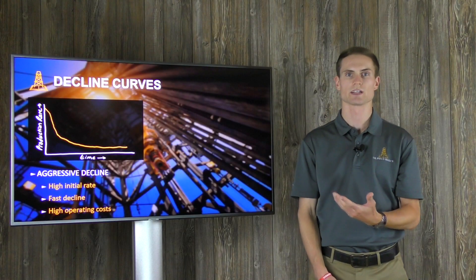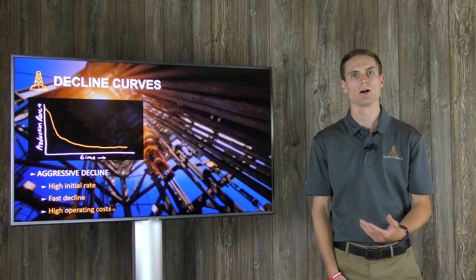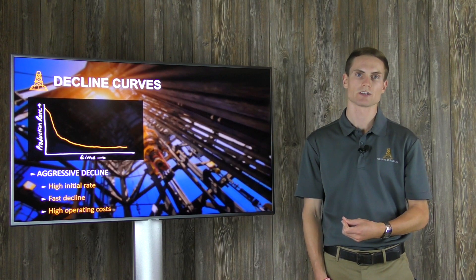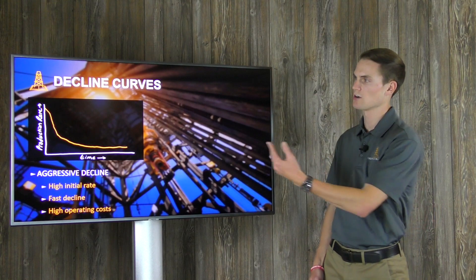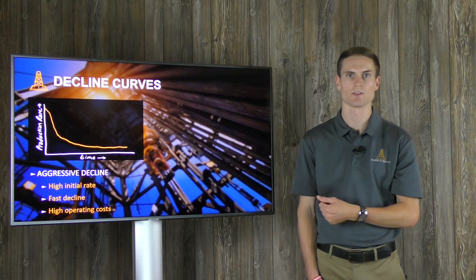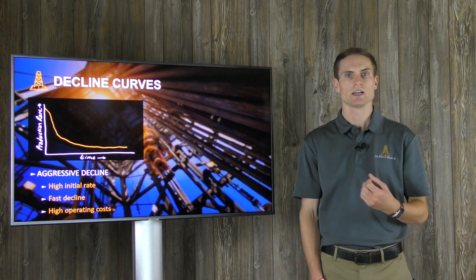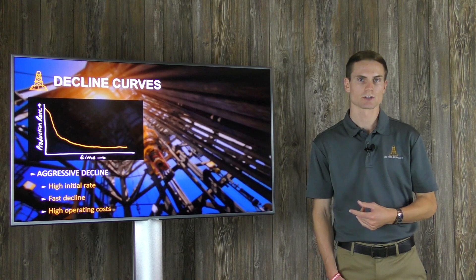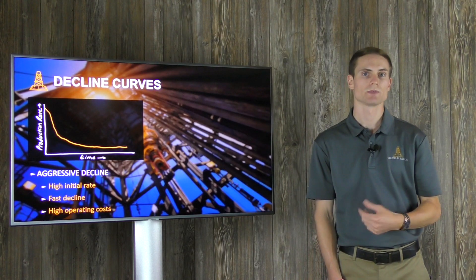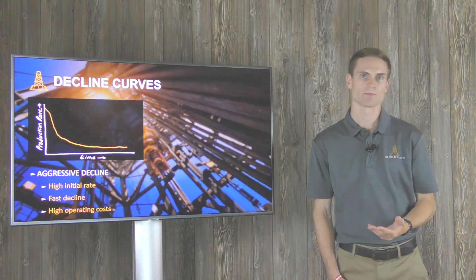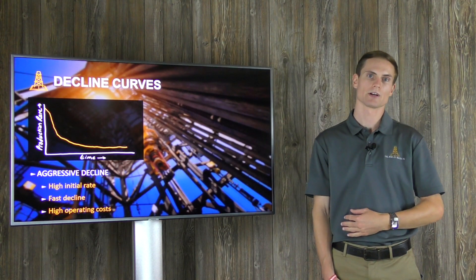This decline curve shows us that as we produce the well, the reservoir pressure decreases, and all other factors held the same, this decrease in pressure is going to lead to less production. This curve graphs oil and gas production on the left versus time on the x-axis, and you can see how quickly they taper off. As a production engineer, we have to engineer the size of the production equipment for the well. If we try to size it for the peak rate at the initial life of the well, we're going to spend a lot of money and end up with oversized equipment that only runs at full capacity for a very short period of its lifetime.